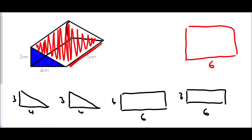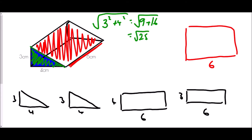We need to know the height of that red rectangle, which is not marked on the diagram. The reason it's not marked is because this is a right-angle triangle. If it's a right-angle triangle, we can calculate this length using Pythagoras: three squared plus four squared, then square root. Three squared is nine, four squared is 16, so it's the square root of 25, which is five.